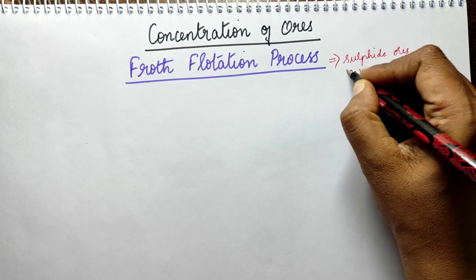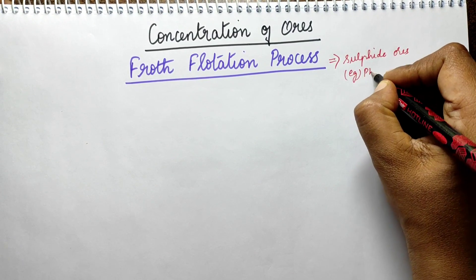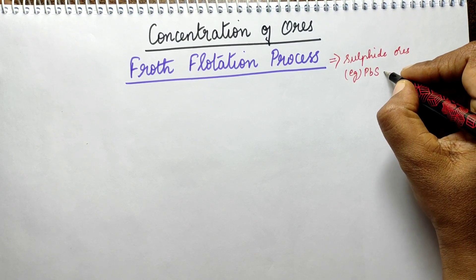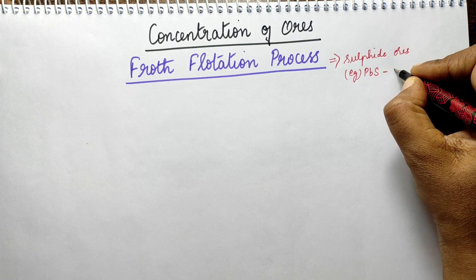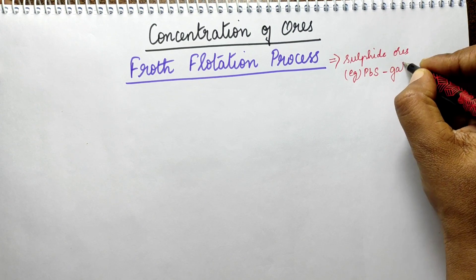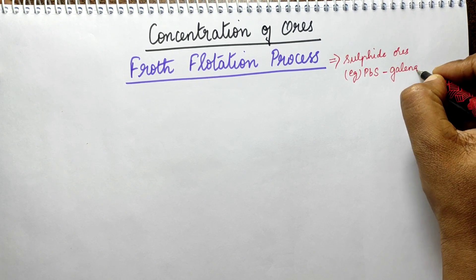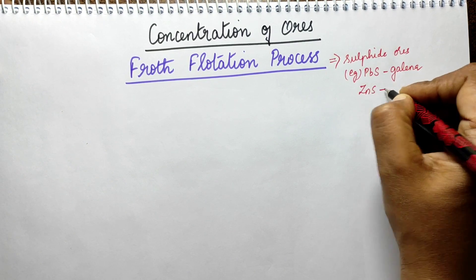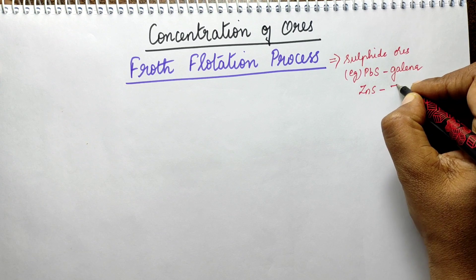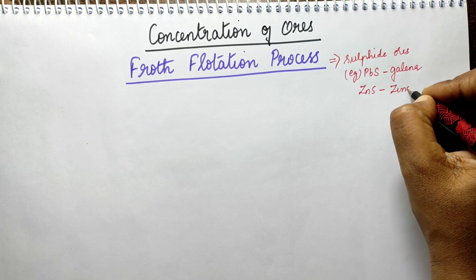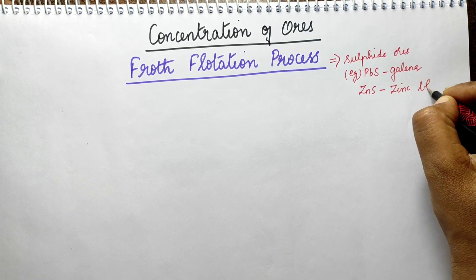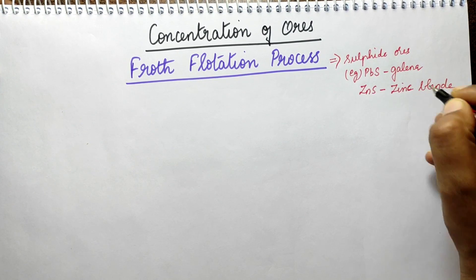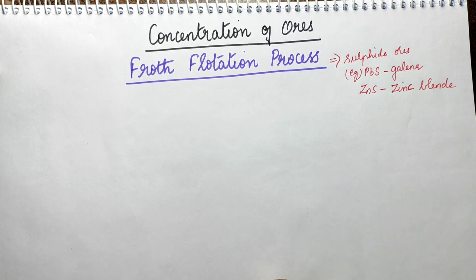For example, PbS — lead sulfide — which is galena. And ZnS — zinc sulfide — which is zinc blende. These are the ores for which we use the froth flotation process.